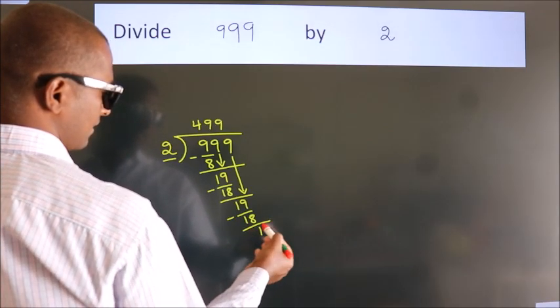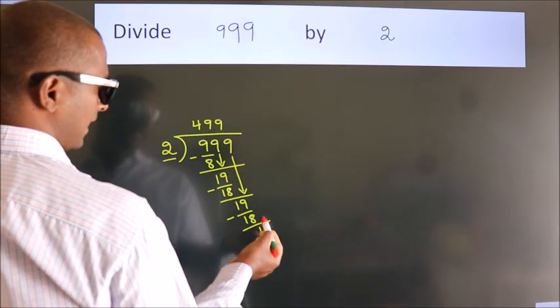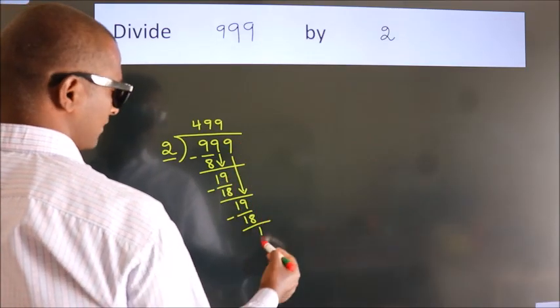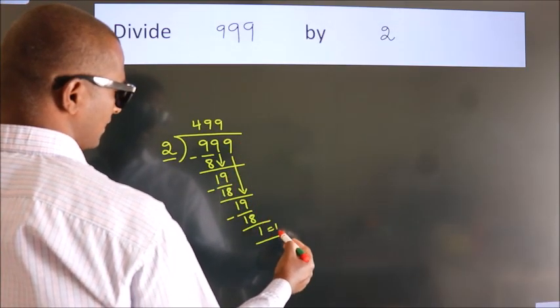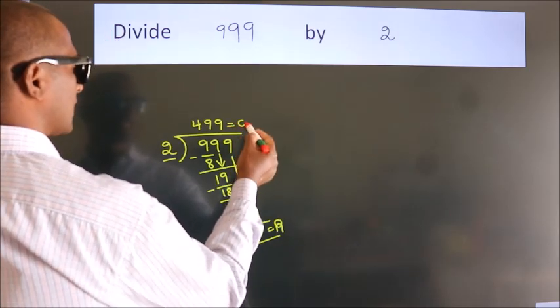After this, no more numbers to bring down. So we stop here. This is our remainder. This is our quotient.